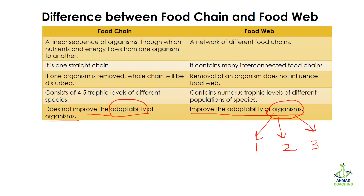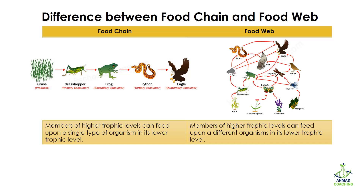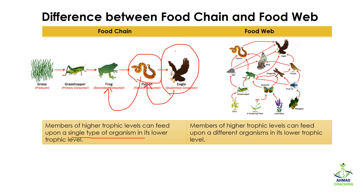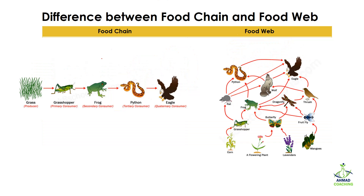In a food chain, members of higher trophic levels can feed upon only a single type of organism from the lower trophic level. For example, the eagle can only eat python, and the python can only eat frog. In a food web, members of higher trophic levels can feed upon different organisms from lower trophic levels. For example, the eagle can eat python, a bird, and also attack a wolf — so it has three options.